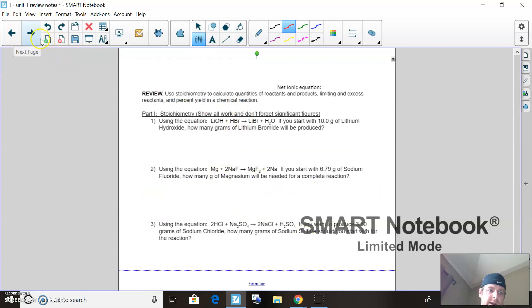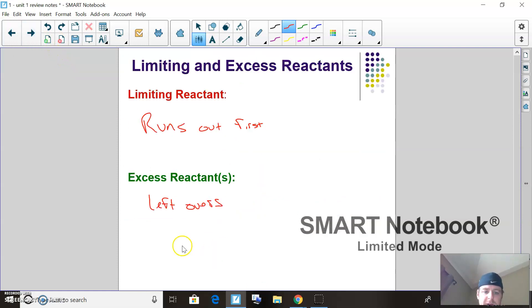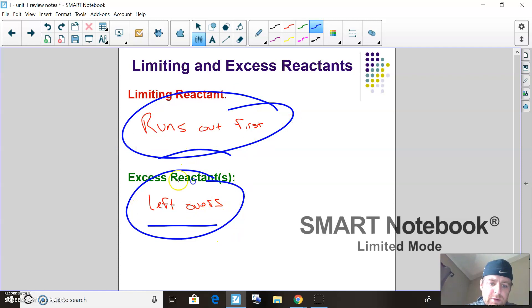There's just a couple little twists on stoichiometry. We talked about it in honors chem, but there's a thing called limiting reactant and excess reactant. Basically, whatever reactant runs out first—the excess reactant is what's left over.